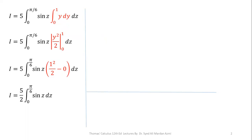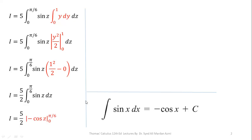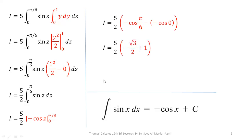Up to this point, we have completed integration with respect to the central variable y. In the next step, we perform integration with respect to z. You must remember the formula: the integration of sin(x) is −cos(x). So we integrate −cos(z) evaluated at limits 0 to π/6. Applying the limits, the value of cos(π/6) is √3/2, and cos(0) is 1. The double negative becomes a plus. After simplification, our final result is: integral = (5/4)(2 − √3).